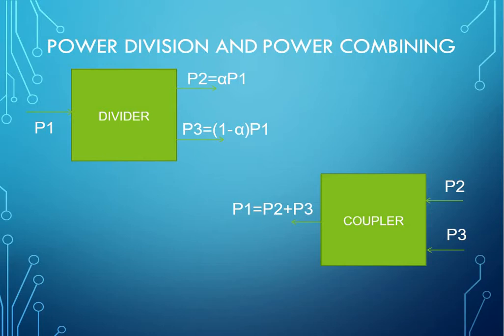In microwave components, consider P1, a power given to a divider. It gets divided into two different powers P2 and P3, where P2 equals alpha times P1, and P3 equals (1 minus alpha) times P1, where alpha is a directional constant. Coming to power combining, we give two different powers P2 and P3 to a coupler where the coupler adds or couples the two powers and gives you a single power P1 equal to P2 plus P3.